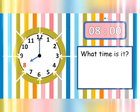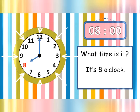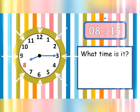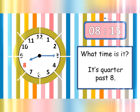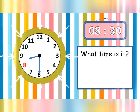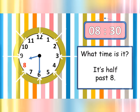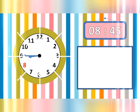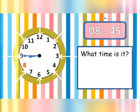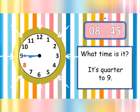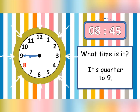What time is it? It is 8 o'clock. What time is it? It is quarter past 8. What time is it? It is half past 8. What time is it? It is quarter to 9.